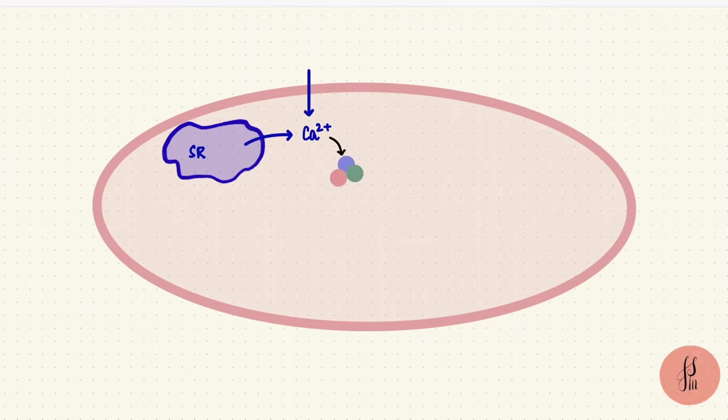The next step would be for calcium to bind to troponin C, if we were talking about skeletal muscle. But smooth muscles don't have troponin. What they do have is a protein called calmodulin. So calcium binds to calmodulin reversibly, forming a calcium-calmodulin complex.